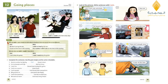We use wish plus past simple to talk about a situation that we would like to be different — something imaginary where the fact is different. For example: we don't live by the sea, so the wish is 'I wish we lived by the sea.' Notice we change the tense. We can also use wish plus 'could' plus base form: the fact is 'I can't play the guitar,' the wish is 'I wish I could play the guitar.'